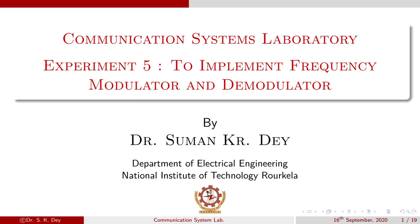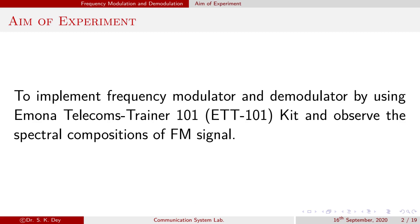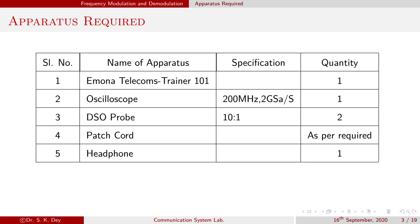Good morning. Today we will perform Experiment 5. The name of the experiment is Frequency Modulation and Demodulation. The aim of the experiment is to implement a frequency modulator and demodulator by using the Emona Telecom Tener 101 kit and observe the spectral composition of an FM signal. These are the required apparatus.